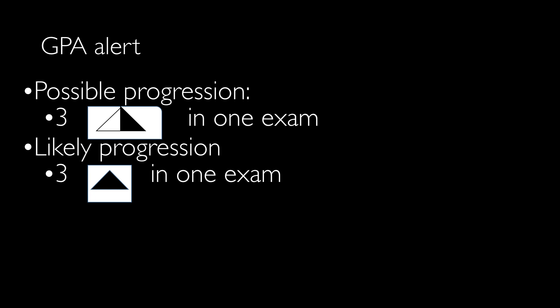If it's repeated on the third visual field test, it will be displayed as a black triangle. If we have three half-black triangles in one exam, the GPA alert will be possible progression. If we have three completely dark black triangles in one exam, the GPA alert will be likely progression.